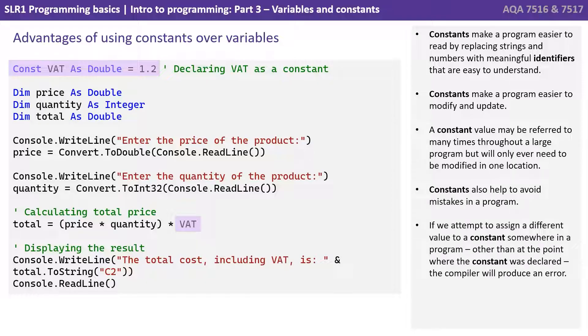Constants also therefore help to avoid mistakes in a program. If we attempt to assign a different value to a constant somewhere in a program other than at the point where the constant was declared, the compiler will produce an error.